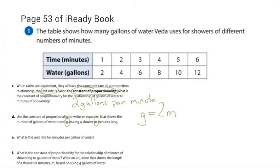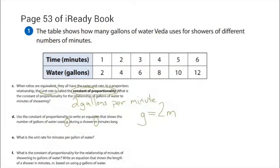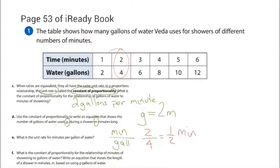The next one: what is the unit rate for minutes per gallon of water? To calculate a unit rate, I write what I want, then put the numbers in. I'm going to pick a different column. I write my minutes on top, my gallons on the bottom, simplify the fraction, and I get one-half minute per gallon.